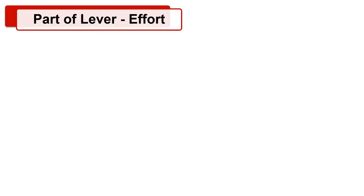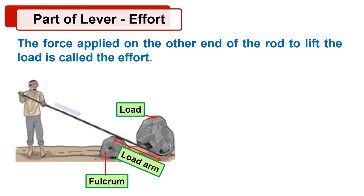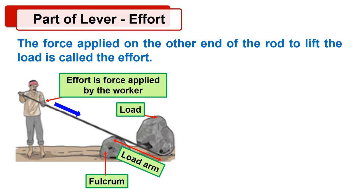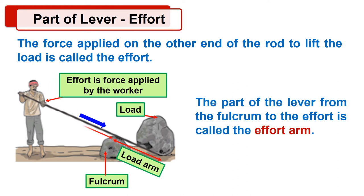Now let's see the third part of a lever, that is effort. The force applied on the other end of the rod to lift the load is called the effort. The part of lever from the fulcrum to the effort is called effort arm.